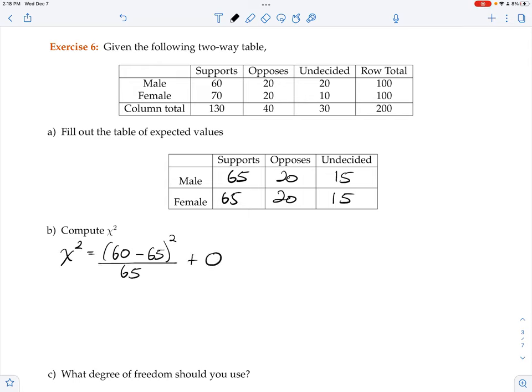The next one, we get 0 since there is no difference, plus 20 minus 15 squared over 15, plus 70 minus 65 squared over 65, plus 0, plus 10 minus 15 squared over 15. When you add all those together, you should get about 4.1022.